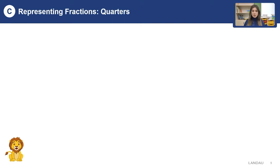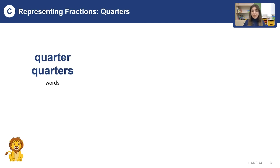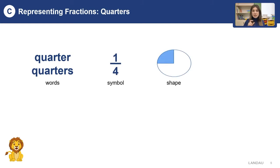Are you ready to learn about quarters? Let's start. We can represent this one by the help of words like quarter or quarters. We can find it by the help of symbols — one over four, one on top and four on the bottom. In shapes, we can show just a quarter — the smallest one-fourth part.